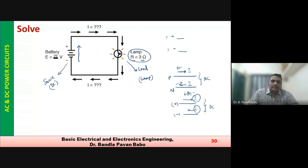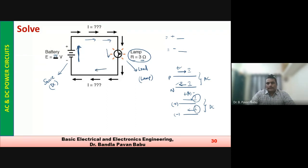So let us consider this direction of current — it always flows from lower potential to higher potential, from minus to plus. This is the way of assuming the current direction when we don't know the exact direction.